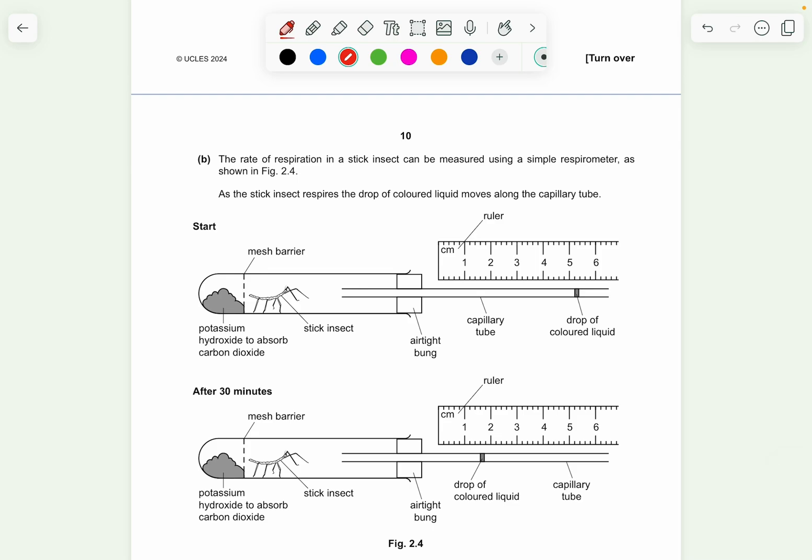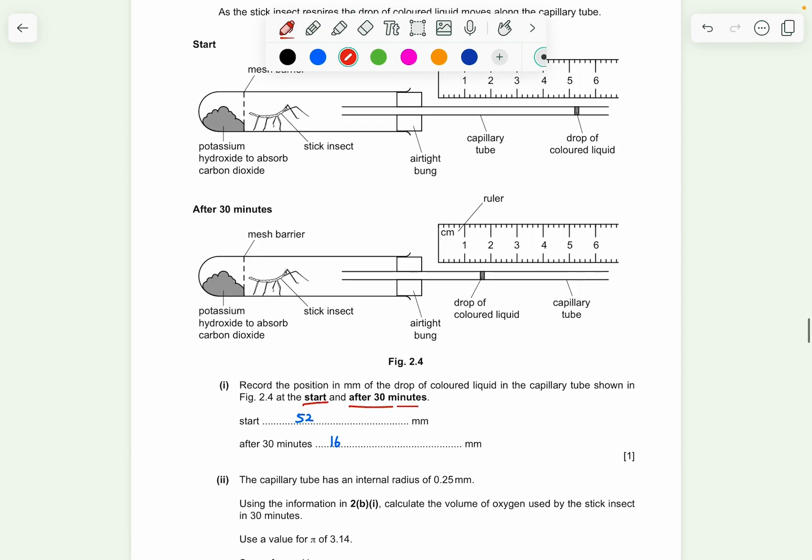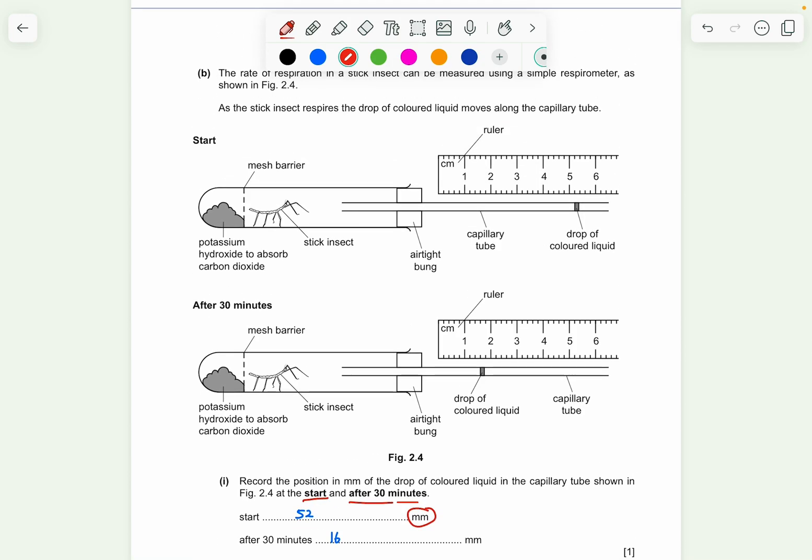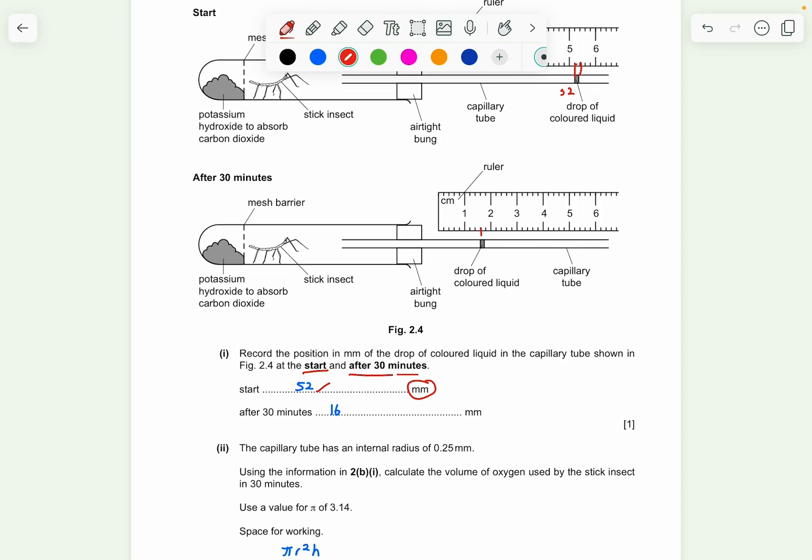So part B, the rate of respiration in a stick insect can be measured using a simple respirometer as shown. As the stick insect respires, the drop of the color liquid moves along the capillary tube. So record the position in mm of the drop of the color liquid in the capillary tube shown in figure 2.1 at the start and after 30 minutes. So they asked it to be in millimeters. So the ruler itself is at centimeter. So for me, I can see there's about 5.2. You can either measure from 5.2 or 5.4. For me, I choose 5.2. So I'm going to get 52. So 52 is my first answer. And the same thing for here, I'm getting 16. Or you can put 18. Either way works. So you just put 16.